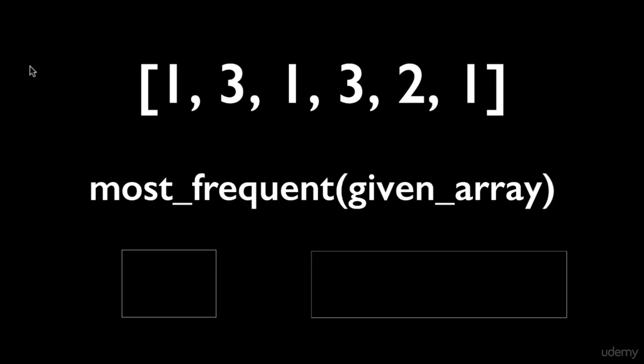If you're given this particular array on the screen, you should return one from this function, because the number one appears three times, the number three appears twice, and the number two appears only once.